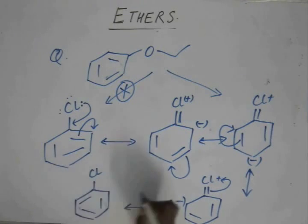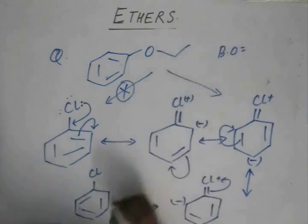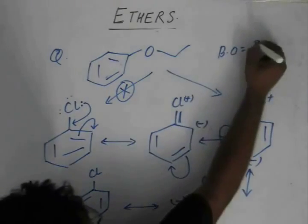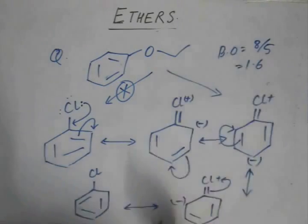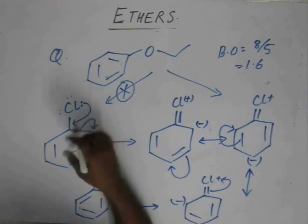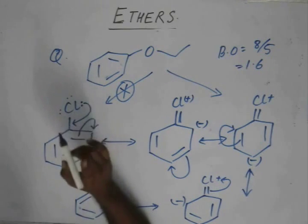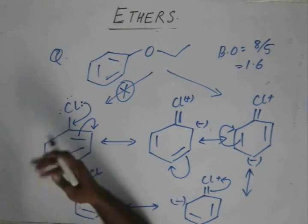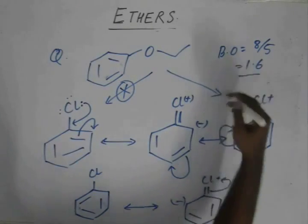The bond order between carbon and chlorine in this case is 1, 2, 3, 4, 5, 6, 7, 8, divided by total number of resonating structures - 8 by 5. So the bond order is 1.6. As it was not evident when we were only looking at the structure of chlorobenzene, the bond order between carbon and chlorine is not 1, the bond order is 1.6. It is trying to gain a double bond character, tending towards 2.